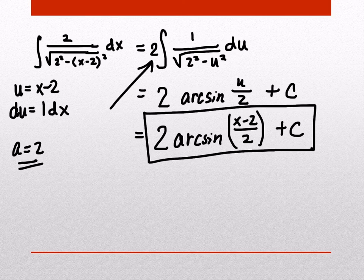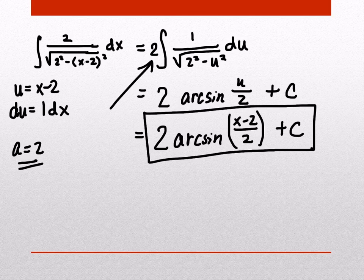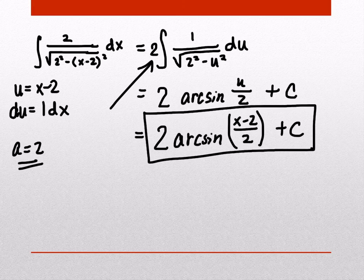We are done with this problem. Don't get carried away thinking you can distribute the 2 from the front through to the inside of the arc sine — you can't do that. It's like taking a 2 on the outside of a radical and sticking it underneath. There's nothing we can do to simplify the 2 on the outside with the 2 in the denominator inside. The problem is finished as written.